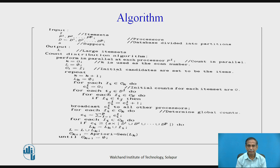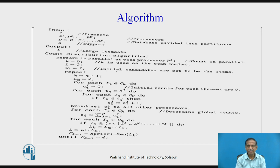In this algorithm, we take the input as the item sets. We have the processors and the database, which is divided into partitions. We consider p partitions of the database and also input a support threshold for the rules. The output is the large item sets that we are going to develop.